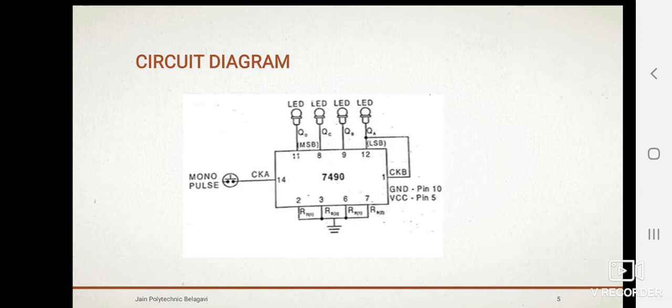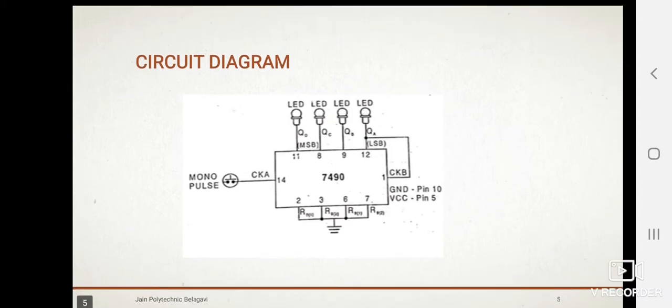This is the circuit diagram. In this, pin numbers 2, 3, 6, 7 are grounded, and pin number 10 is also grounded. Pin number 5 is connected to VCC 5V, and pin numbers 11, 12, and 1 are shorted. Pin numbers 11, 8, 9, 12 are to get the outputs, and pin number 14 is connected to monopulse clock through this input.